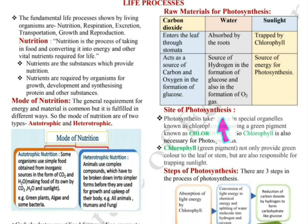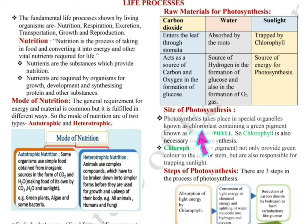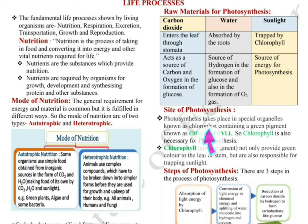Next is the site of photosynthesis — where does the reaction occur? Every green cell that contains chlorophyll can carry out photosynthesis. Photosynthesis takes place in special organelles known as chloroplasts, which contain a green pigment known as chlorophyll. Chlorophyll is a pigment — pigments are protein molecules stored in chloroplasts, a bag-like structure found in plants and some eukaryotes. Chlorophyll not only provides green colour to the leaf or stem but is also responsible for trapping sunlight.